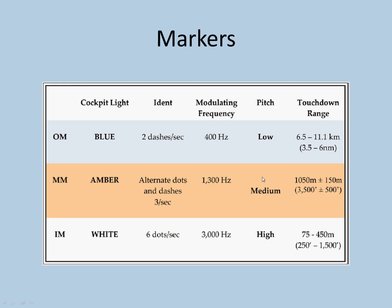Markers. Markers are giving us whether you are on profile on the localizer throughout the approach. Outer marker: blue in color, two dashes per second, 400 Hz, low pitch from touchdown. It is indicating that you are 6.5 to 11.1 km to touchdown.